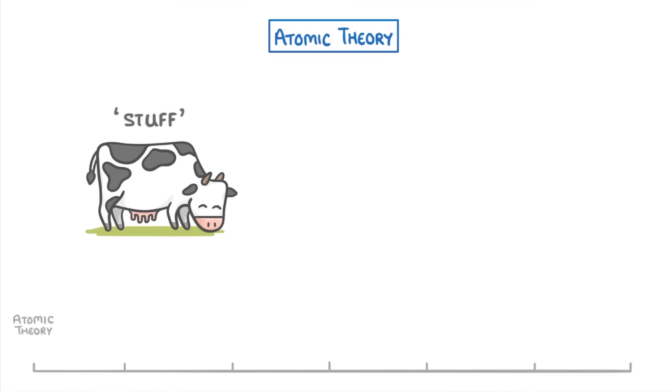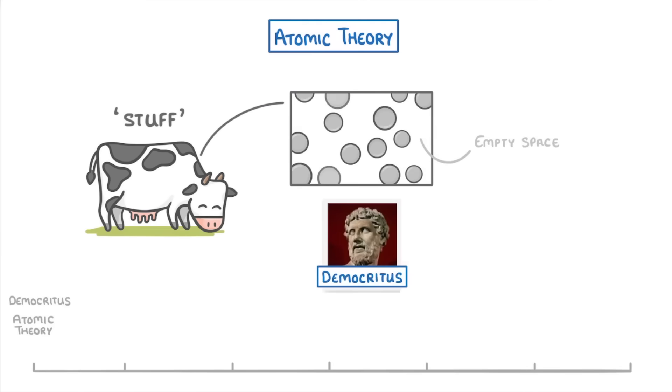The first major theory that tried to explain what stuff is made out of was atomic theory, which is the idea that everything is made up from tiny little particles that can't be broken down any further and that they're separated from each other by empty space. This was originally proposed by a guy from ancient Greece called Democritus, who was alive around 500 BC.